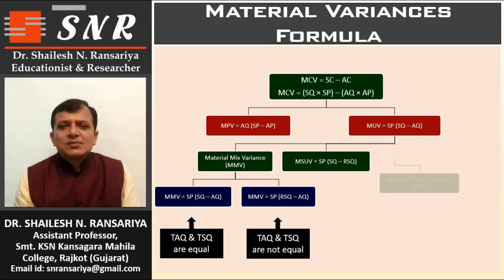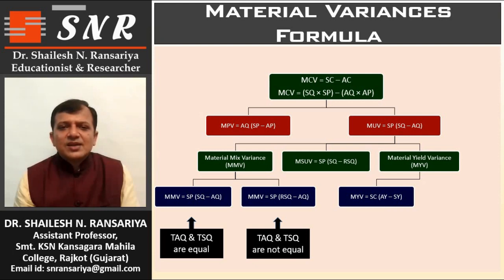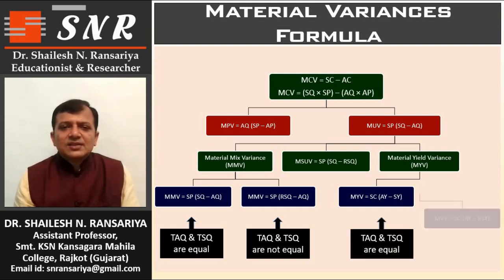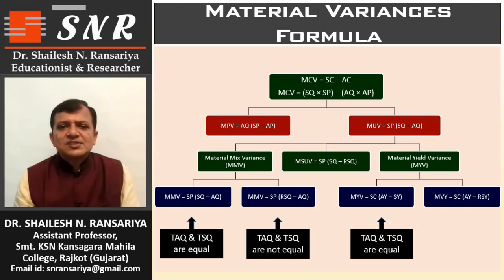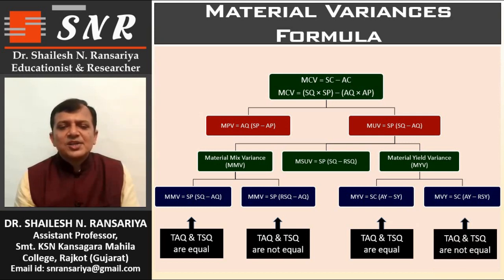The last variance is Material Yield Variance, MYV. There are two formulas. The first is: MYV = SC per unit × (Actual Yield − Standard Yield). We use this first formula when Total Actual Quantity and Total Standard Quantity are equal. We use the second formula when TAQ and TSQ are not equal. Actual yield means actual quantity and standard yield means standard quantity. Revised standard yield means revised standard quantity.